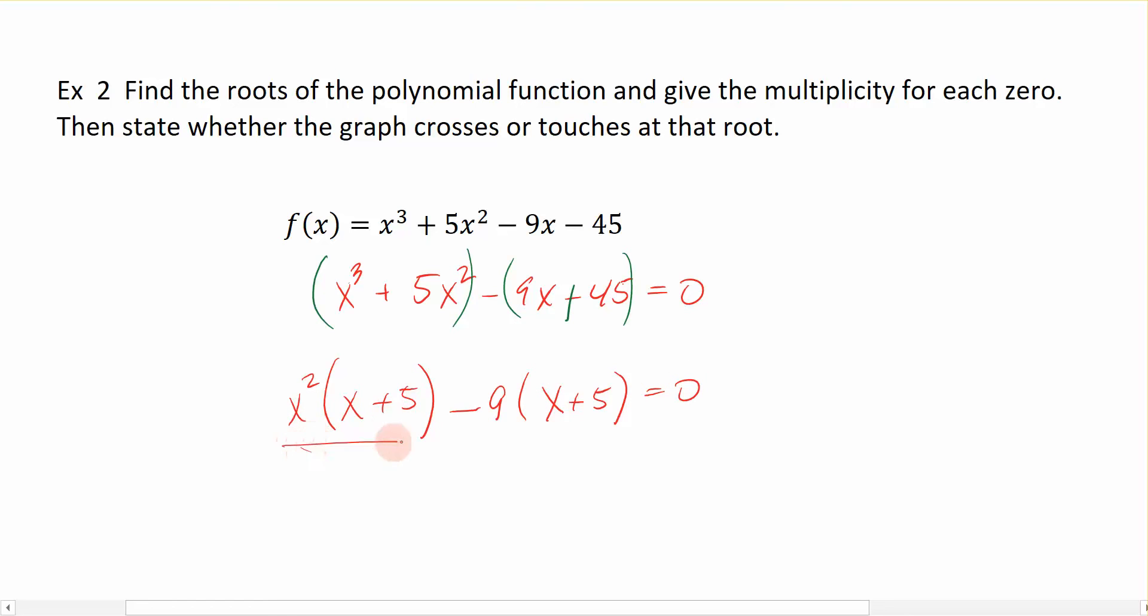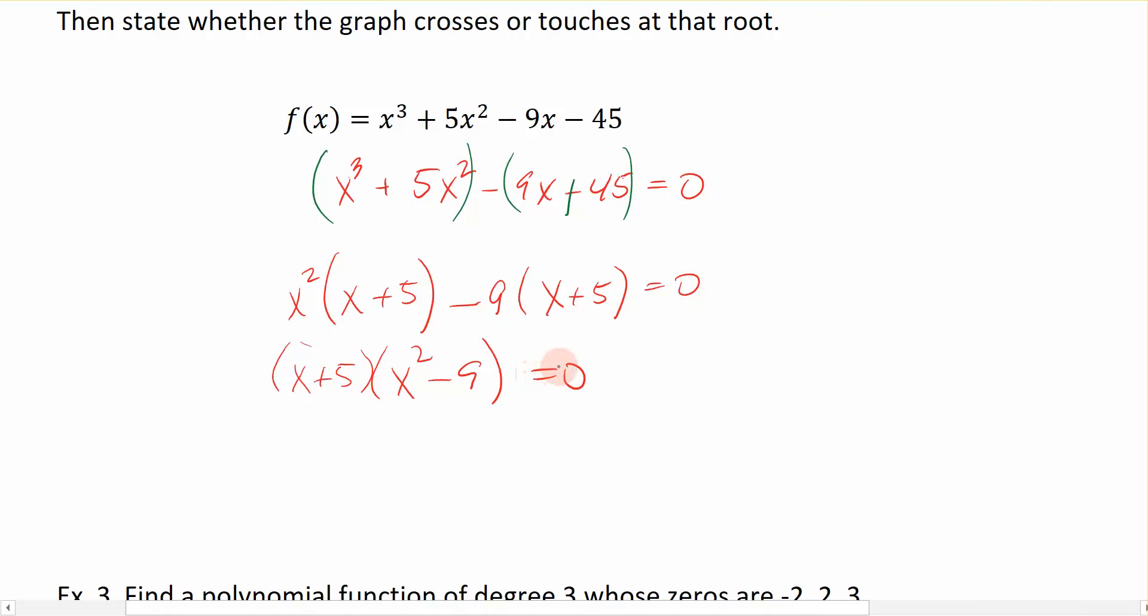Now that I have this, I have two terms. Technically, I have a term here minus a term here, and we want to factor out the greatest common factor between these two terms. Well, the thing in common between those two terms is the x + 5, or the set of parentheses. So x + 5 factored out leaves me with an x² - 9 = 0. So now I have my function fully factored, set equal to 0, and I take each of the factors and set them equal to 0 to solve. So x + 5 = 0, x² - 9 = 0. Over here on the left equation, x is equal to negative 5.